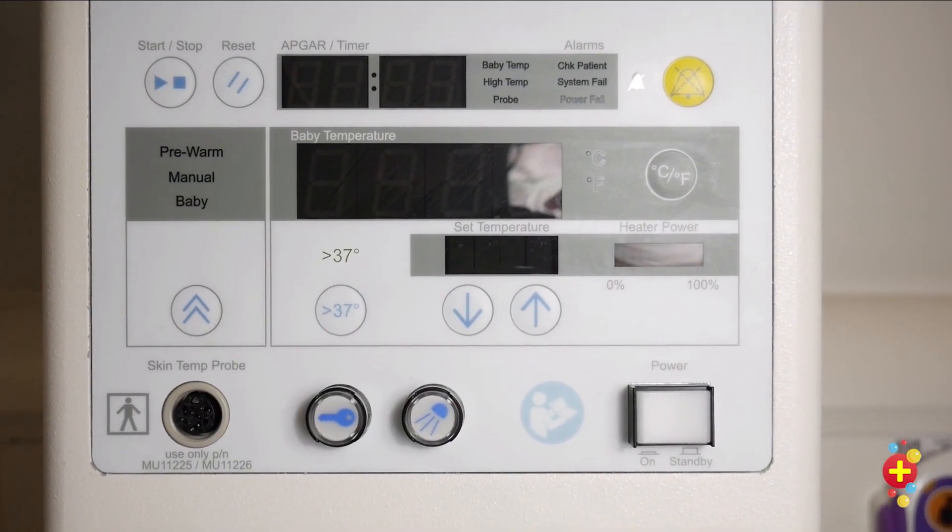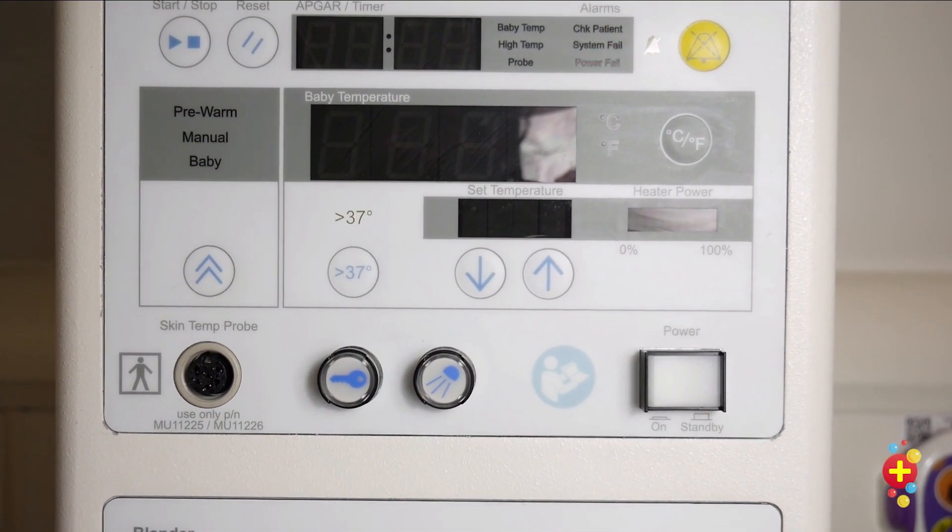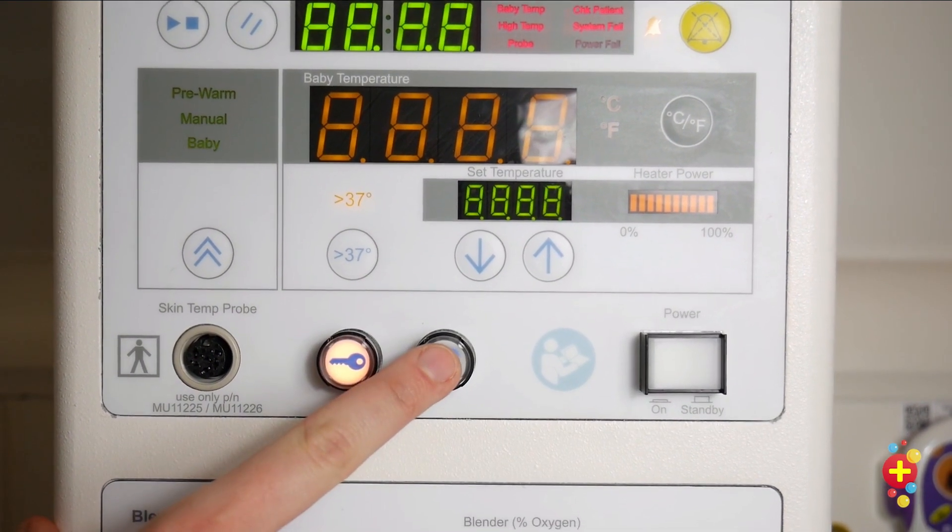Once the resuscitaire is plugged in and connected to the oxygen and air, we'll start by turning it on and then switching on the light so we can see what we're doing.